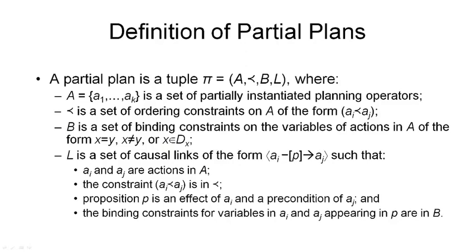Now, here is the formal definition of what constitutes a partial plan. And a partial plan is defined here as a four-tuple consisting of four components. It consists of actions, it consists of ordering constraints, variable bindings, and causal links representing the rationale why actions are in the plan.